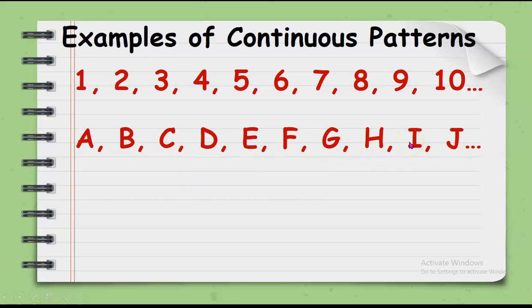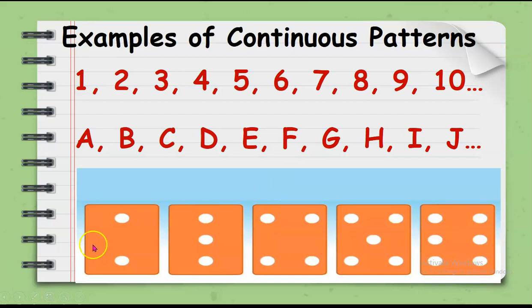And, of course, we have here the blocks with white dots. We have here 2 dots, 3 dots, 4 dots, 5 dots, and 6 dots. So, we may already think that the next dots will be 7 because of the continuous patterns.